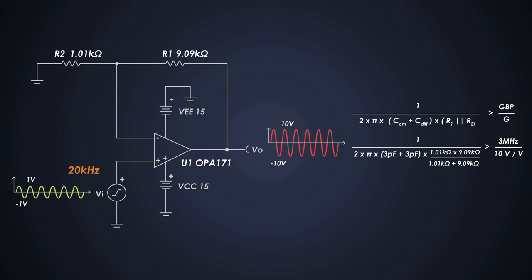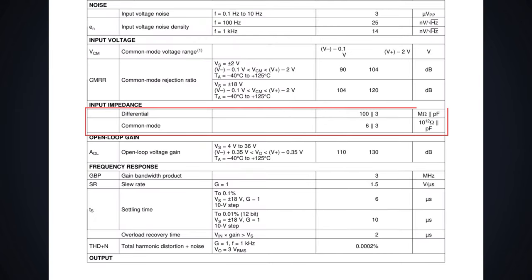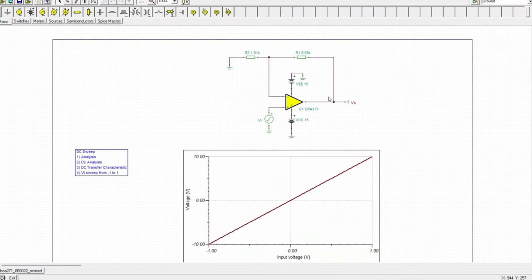And this value is 29.18 MHz, which is greater than 300 Kilohertz. These capacitors are common mode and differential input capacitance of the OPA 171. These values can be obtained in the datasheet.